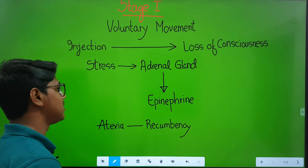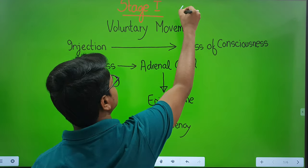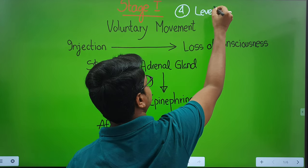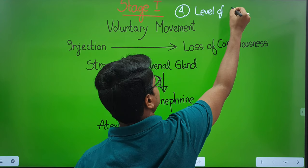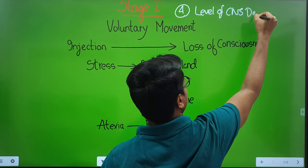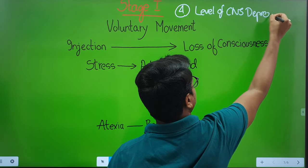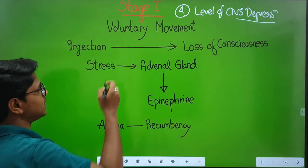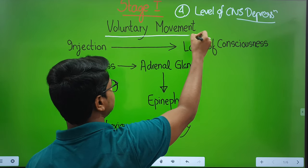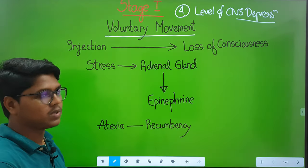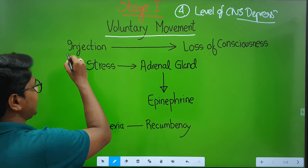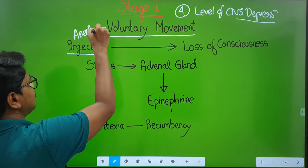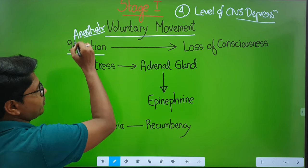Stages of anesthesia has four stages on the basis of level of CNS depression. Coming to Stage 1 — Stage 1 is also known as the stage of voluntary movement. This stage ranges from when you give the anesthetic injection to the loss of consciousness.